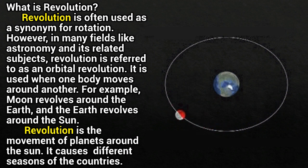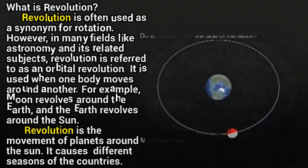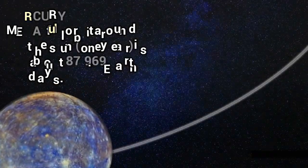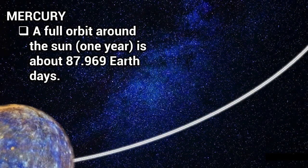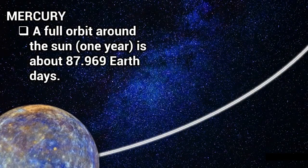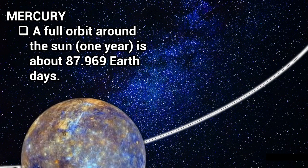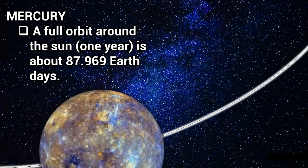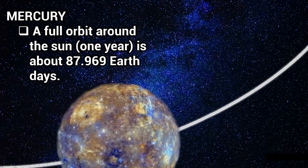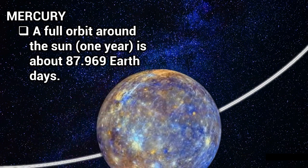Revolution causes different seasons in different countries. Mercury: a full orbit around the Sun is about 87.969 Earth days.